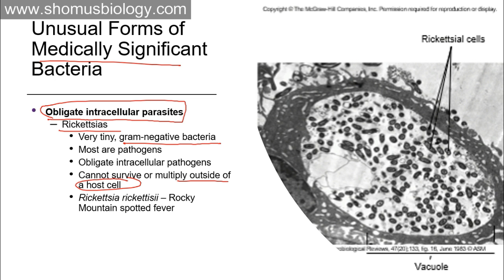Rickettsia are pathogenic and cause a huge array of diseases. One such example is Rickettsia rickettsii, which causes Rocky Mountain spotted fever. There are different species of Rickettsia — you can read about them since questions are asked from this section in GATE, NET, and IIT JAM exams. You can find the species of Rickettsia and their associated diseases in a table on Google Images.